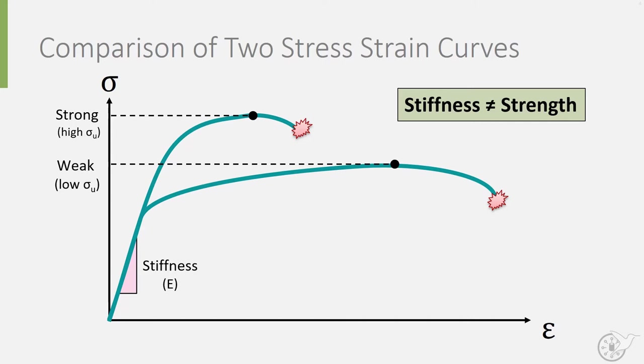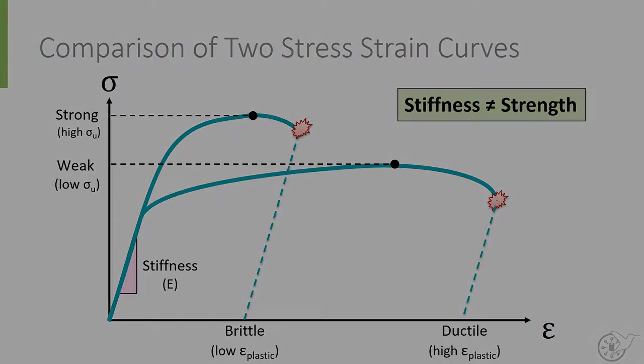If you take another look at this diagram, you can also see that the upper line has little deformation before breaking, whereas the lower line has quite a large deformation before failing. This is indicative of another set of material properties, whether a material can be classed as ductile or as brittle.